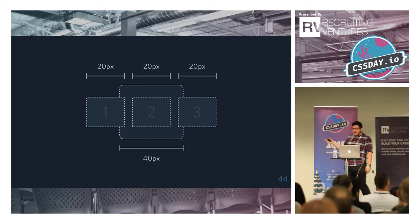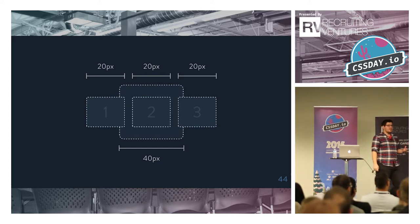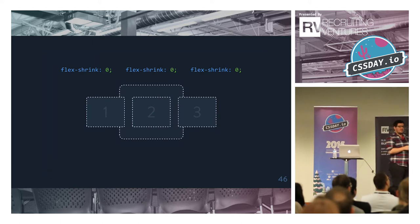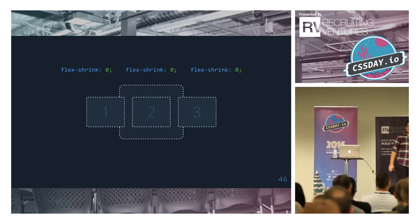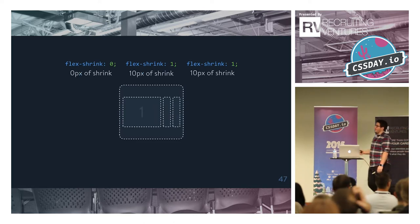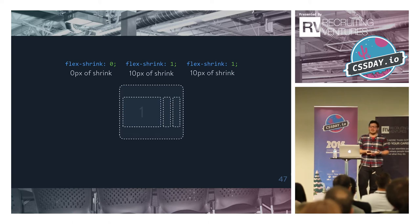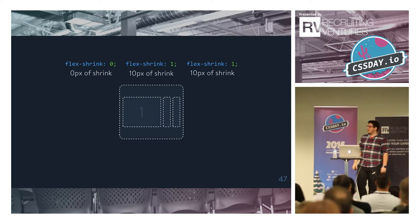Flex-shrink works in an incredibly similar way, just on the reverse side. If the container is 40px wide but three children are each 20px, there's 20px of shrinking that needs to happen. If flex-shrink is zero for all of them, none will shrink — they'll just overflow their container. As soon as we set non-zero flex-shrink values, they shrink down to fit available space. Elements with flex-shrink share proportionately in the amount of shrinking needed. They can't go below zero, and this will still respect a specified min-width.